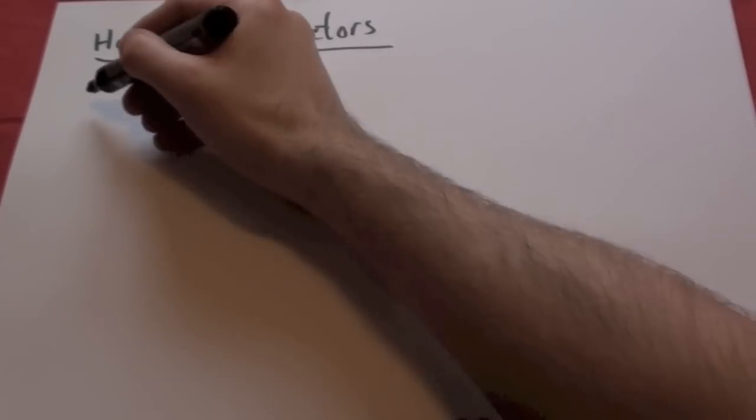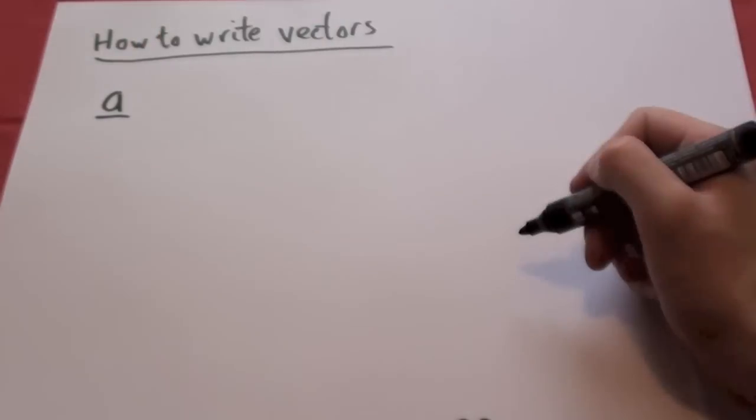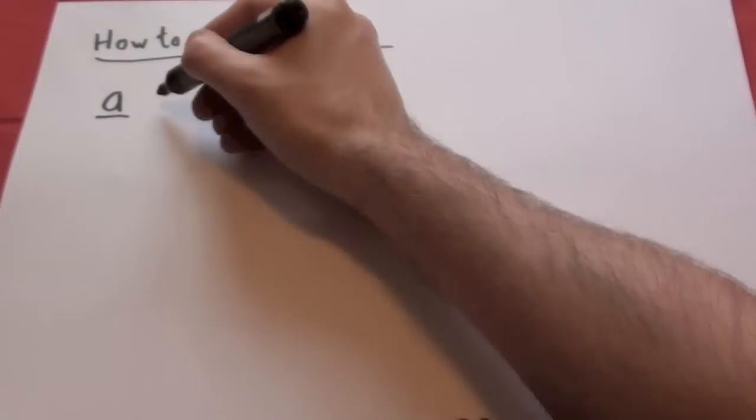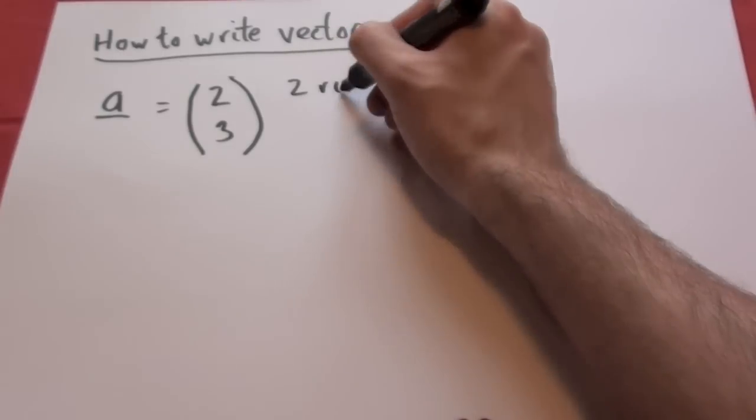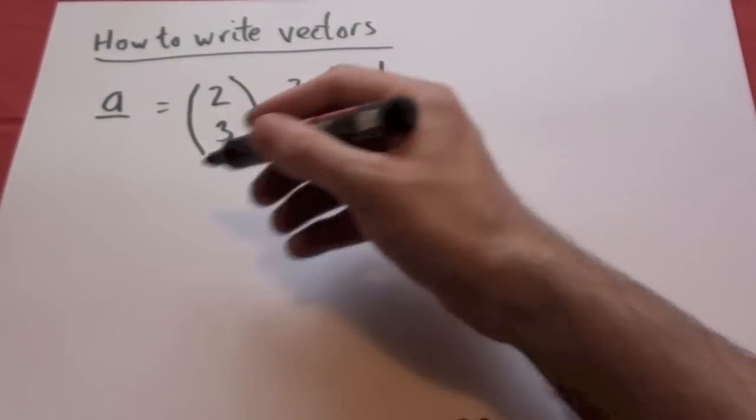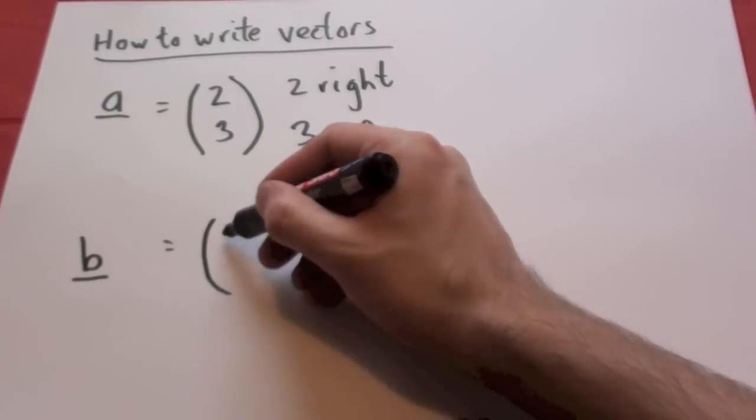So how to write vectors? A vector is normally written like this. This is vector A with an underline. In books you'll see it without underlining, bold. This next to it is the column vector. 2, 3 means 2 right and 3 up.